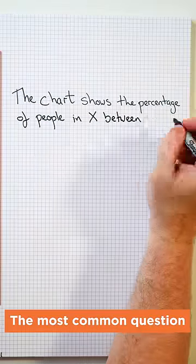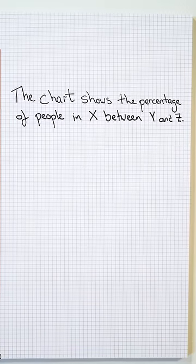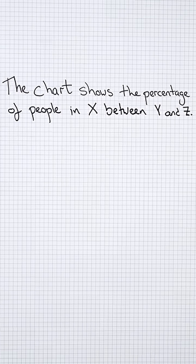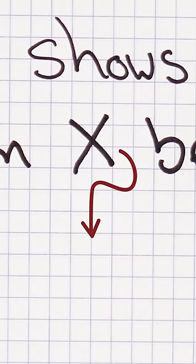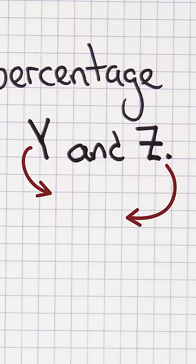And by far, the most common question looked like this: The chart shows the percentage of people in X between Y and Z, X being a country and Y and Z being dates.